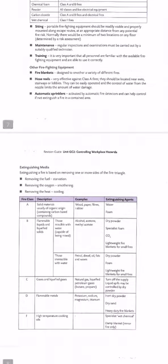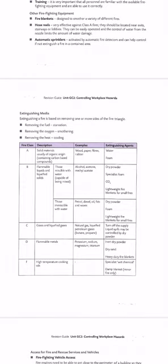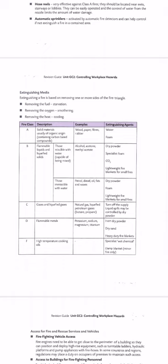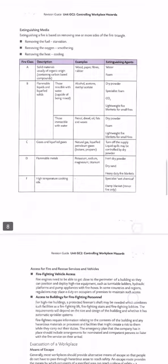Extinguishing a fire is based on removing one side of the fire triangle. Each class of fire — A, B, C, D, and F — requires the appropriate type of fire extinguisher. Fire services and rescue vehicles should have access in case of fire, including access to the building for firefighter personnel.